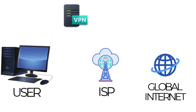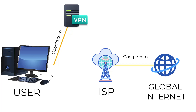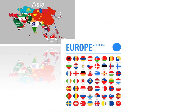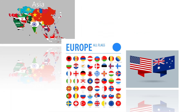When you search for something on your PC, your request is encrypted and sent through a secure tunnel to a VPN server. The server then browses the internet on your behalf, keeping your activity hidden from your ISP. This VPN service offers servers in Asia, Europe, the USA, and Australia, ensuring you always have a fast and secure connection.